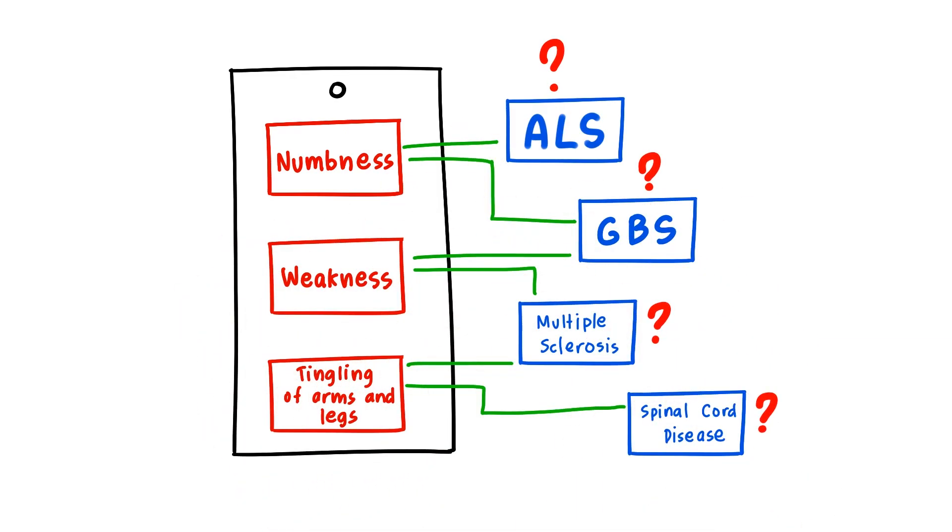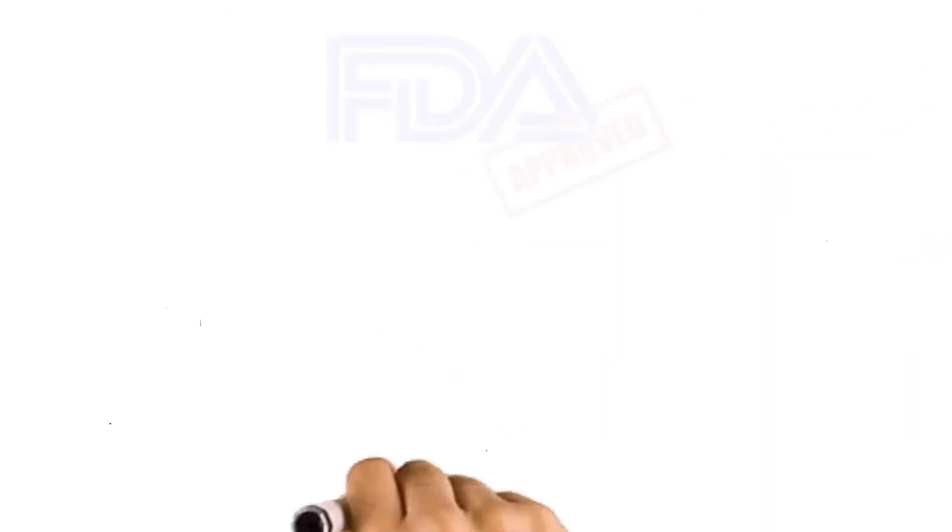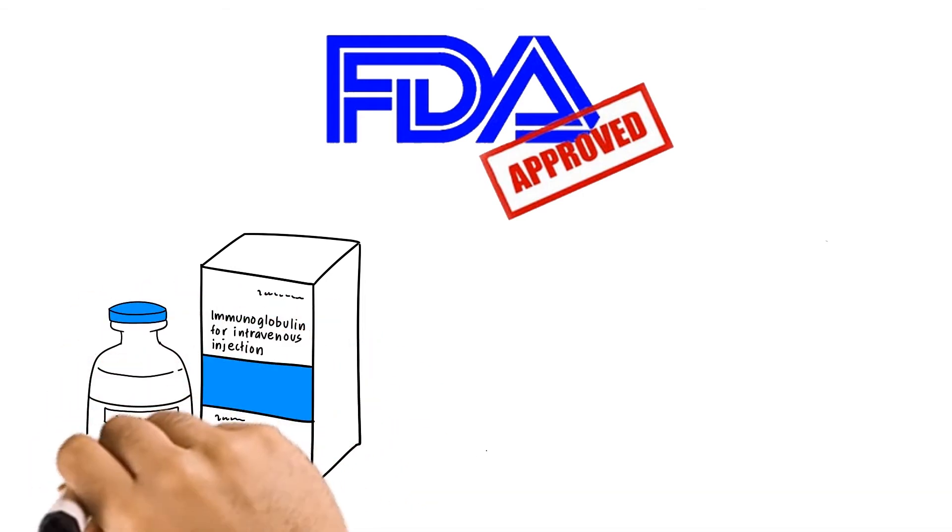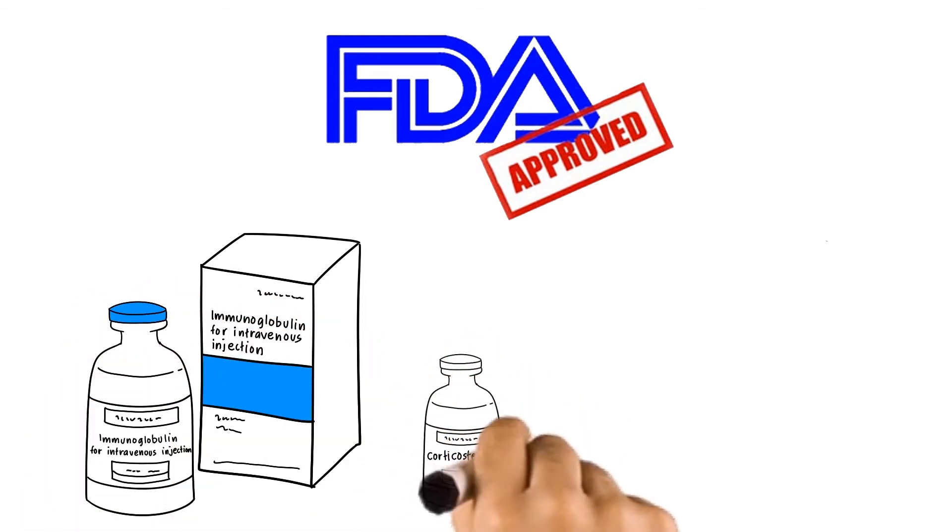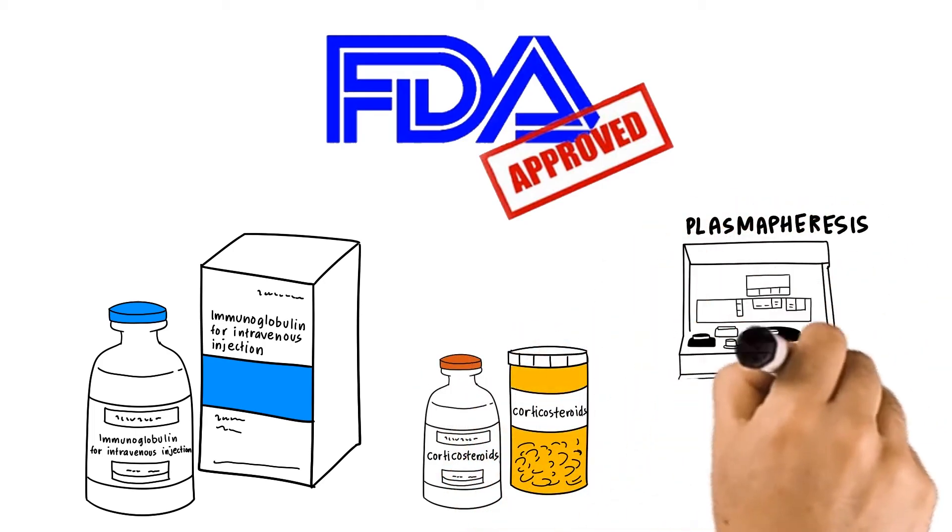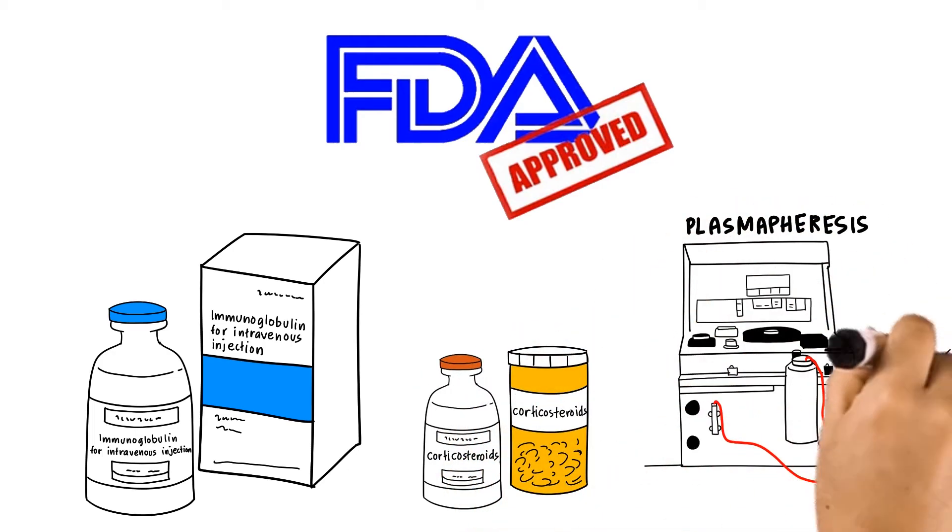Once CIDP is diagnosed, you will discuss different treatment options with your neurologist. FDA-approved treatment for the management of CIDP includes IVIG, or intravenous immunoglobulin, but some patients are treated with corticosteroids or plasmapheresis instead.